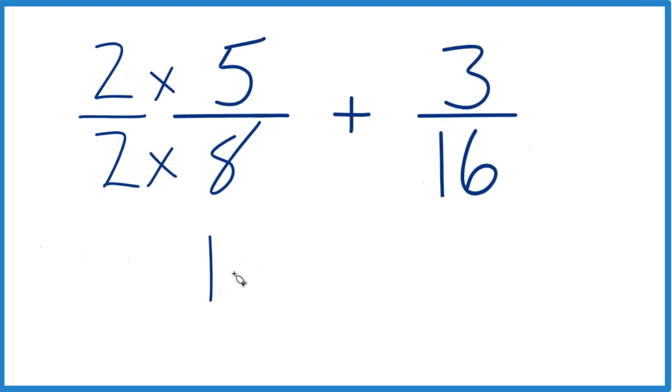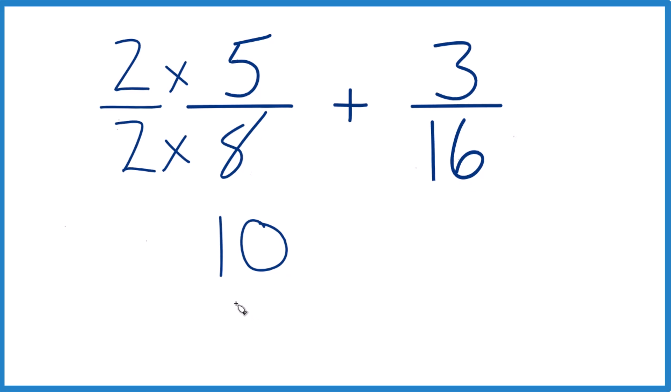So 2 times 5 is 10, and 2 times 8 is 16. And 10 sixteenths is the same thing as 5 eighths. They're equivalent fractions. The value's the same, just the way they're represented is a little different.